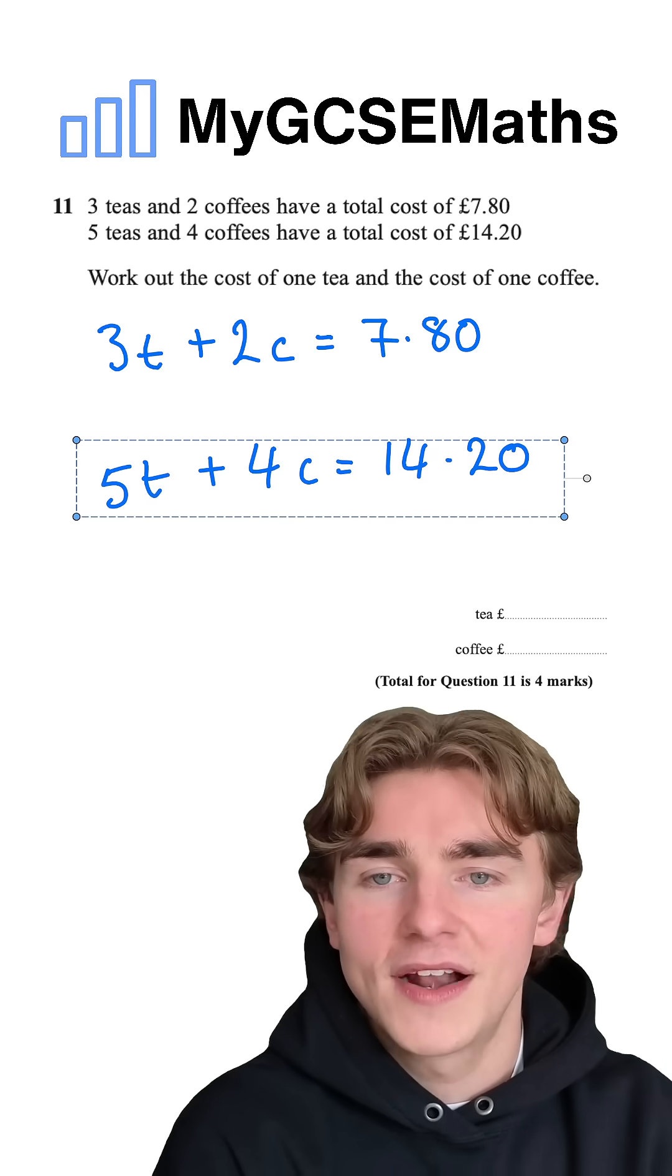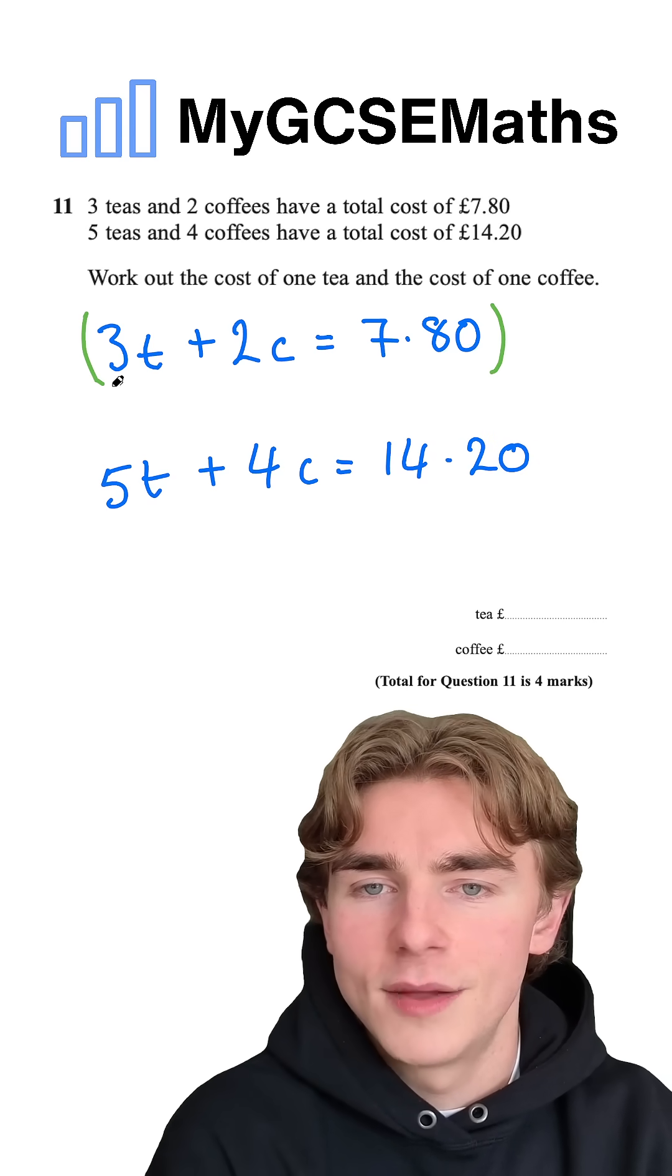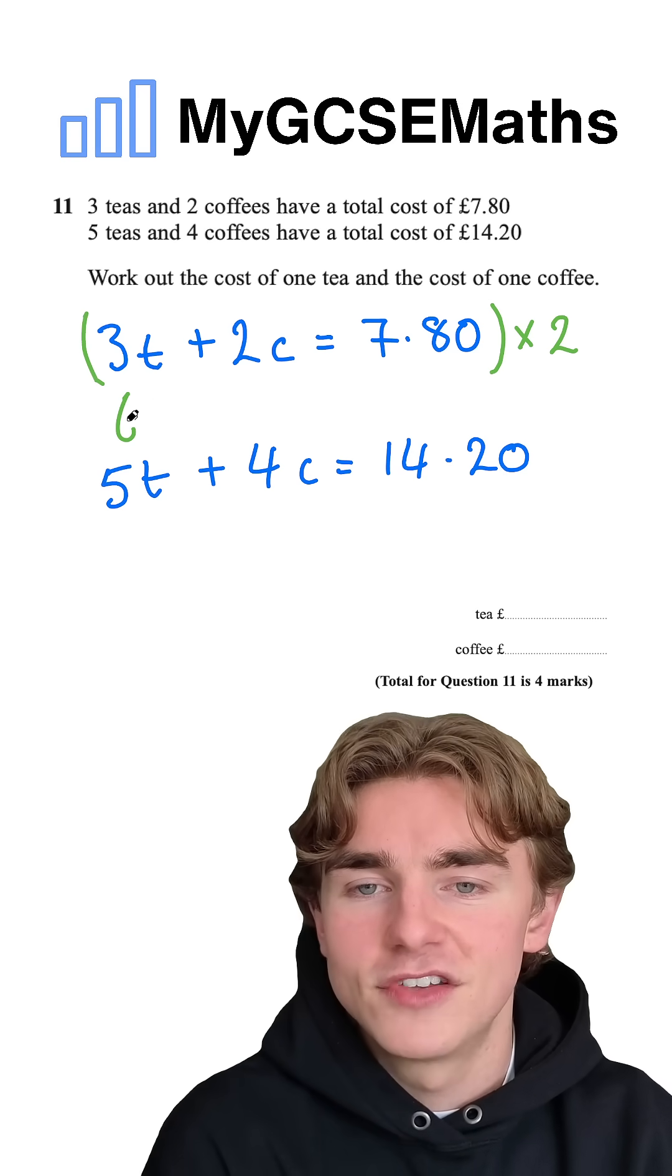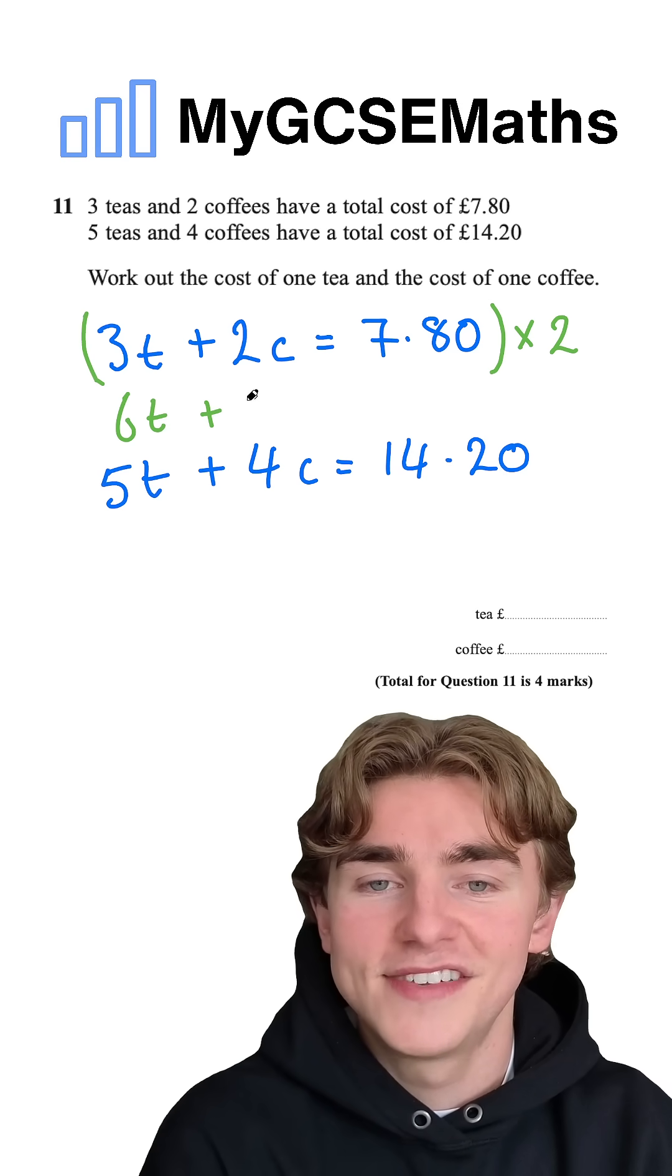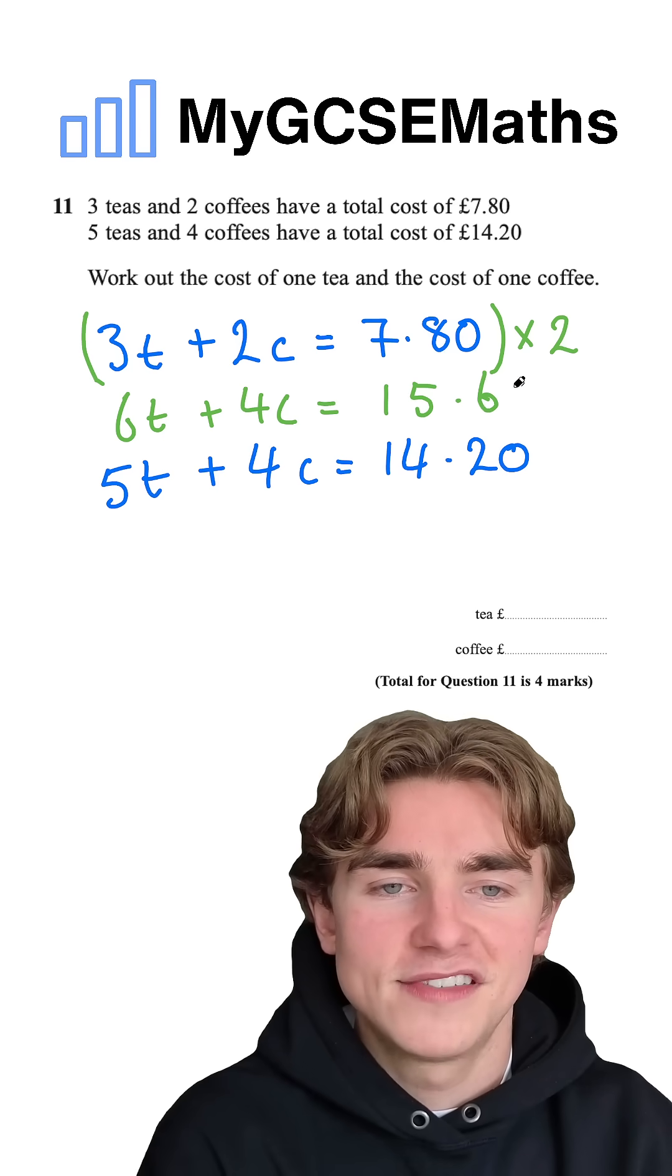We're going to times this top equation by two. So what's that going to give us? Three t times two is six t plus two c times two is four c. Seven pound 80 times by two is 15 pound 60.